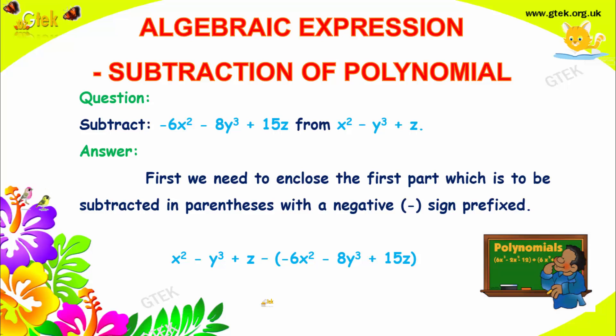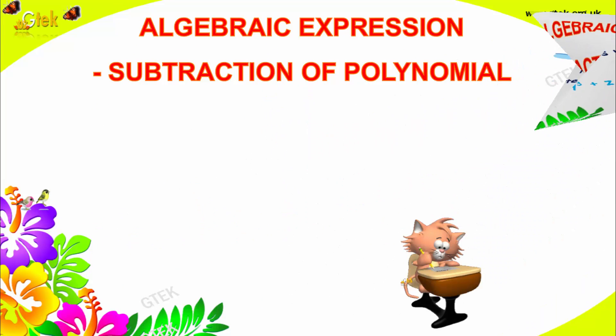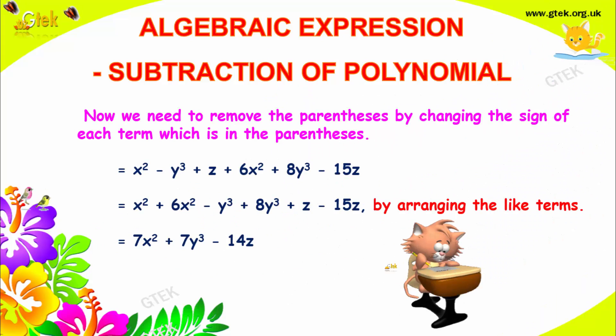Now we'll go with another problem. It's minus x square minus y cube plus z, and 6x square minus 8y cube plus 15z from this one. From indicates you need to have this one as first minus the second term as second. Rearranging it, you'll get minus into minus is plus 6x square, minus into minus is plus 8y cube, minus into plus is minus 15z.